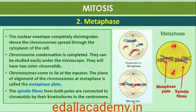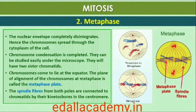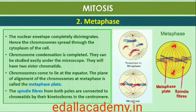The complete disintegration of the nuclear envelope marks the start of the second phase of mitosis, Metaphase; hence the chromosomes are spread through the cytoplasm of the cell. By this stage, condensation of chromosomes is completed and they can be observed clearly under the microscope. This is the stage at which the morphology of chromosomes is most easily studied. The metaphase chromosome is made up of two sister chromatids, which are held together by the centromere. Small disc-shaped structures at the surface of the centromeres, called kinetochores, serve as the sites of attachment of spindle fibers to the chromosomes that are moved into position at the center of the cell.